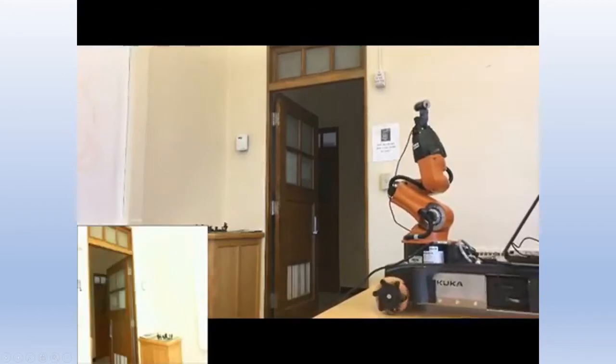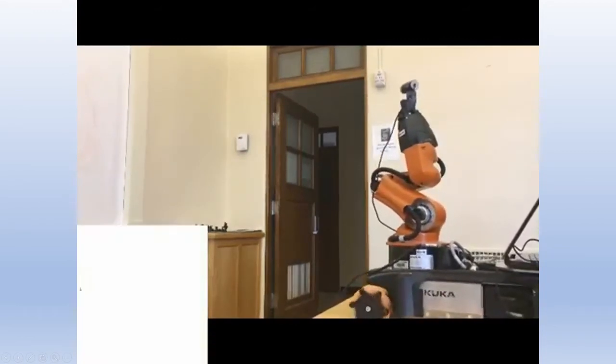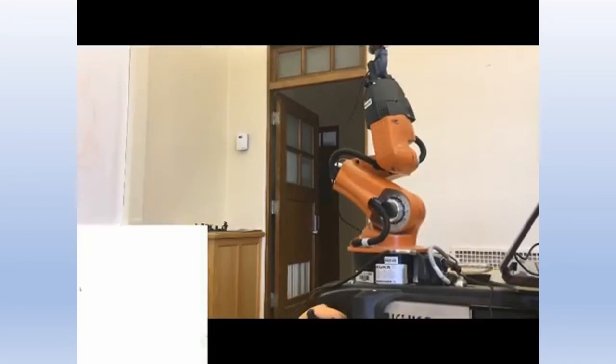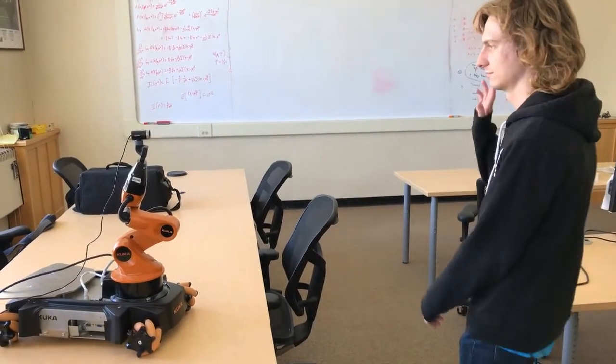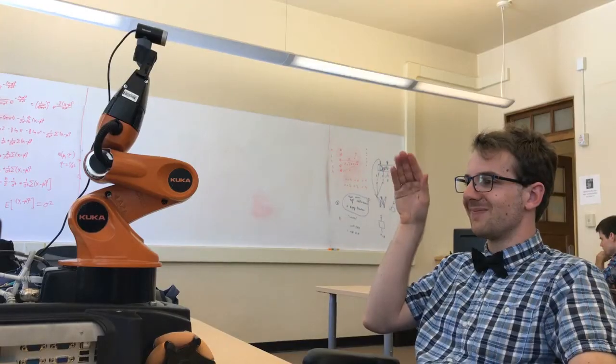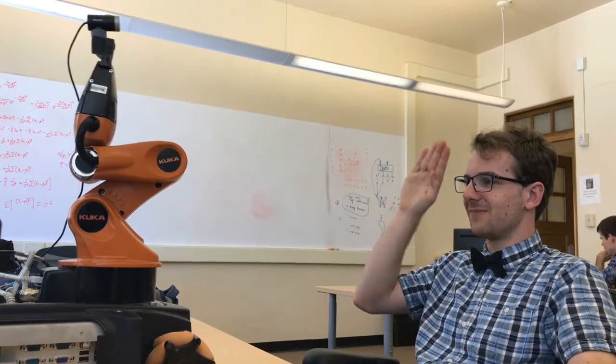Now, when the robot sees a new face through its camera, it reports who it thinks the person is and how confident it is about its answer. Usually the AI is 90 to 100% confident, but if it is less than 70% sure, then the person is most likely a guest that the robot has never seen before.